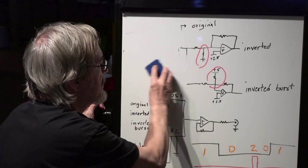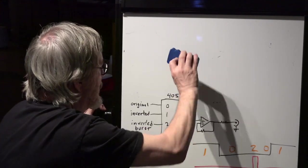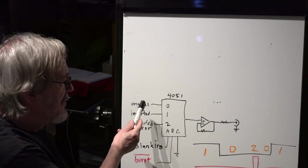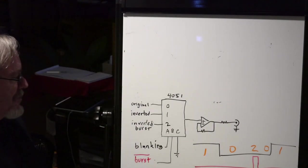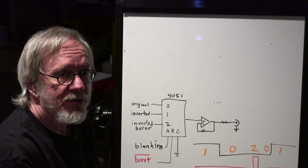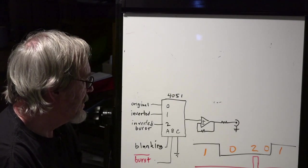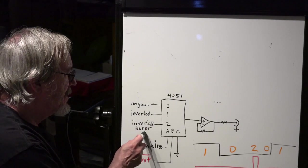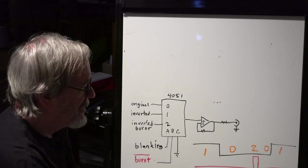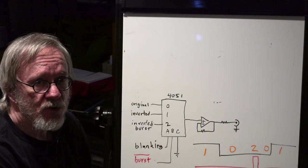Let's make some space. And what are we going to do with those signals? What are we going to do with the original, the inverted, and the inverted burst? Well, we want to select between them. When the effect is in full tilt boogie, both switches are flipped up. What we want is the inverted video and the inverted burst. The inverted video is one. The inverted burst is two.